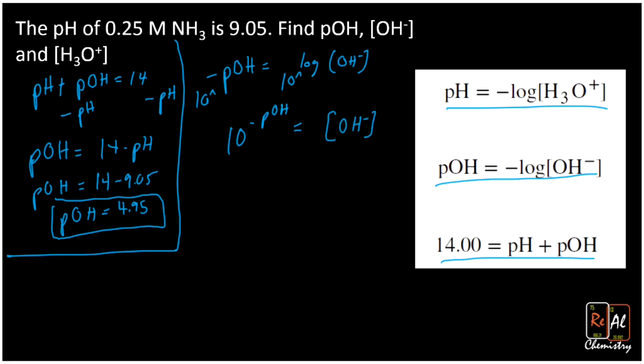Alright, and now 10 raised to my negative 4.95 is going to give me 1.12 times 10 to the minus 5 molar. So that's my OH- concentration.